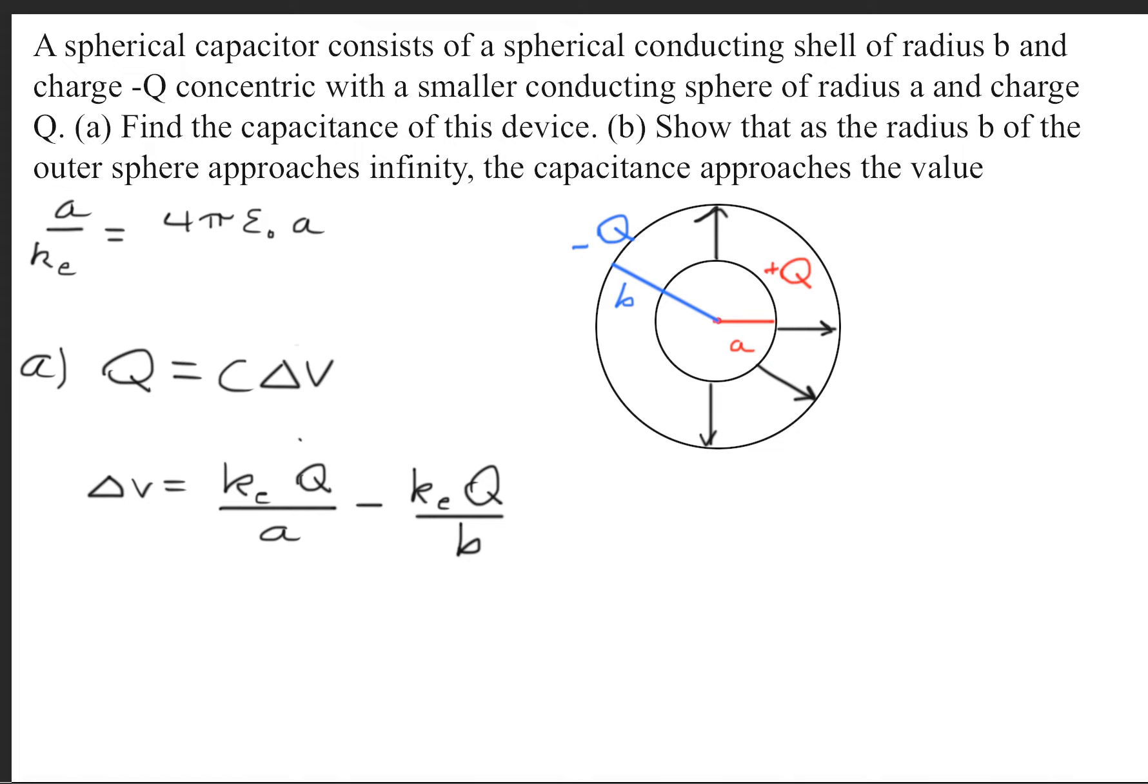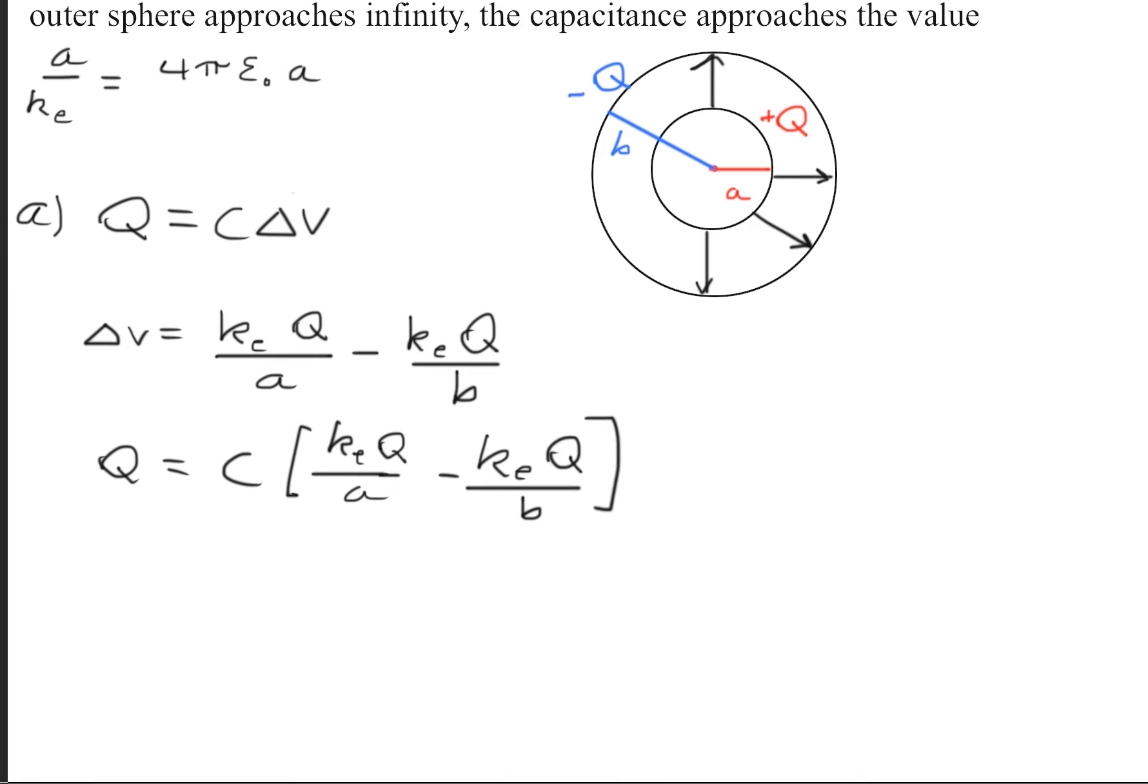We'll take this and substitute it in right here. So we got Q = C times, in brackets, k_e·Q/a - k_e·Q/b. Let's go ahead and clean this up a bit.